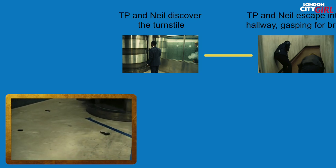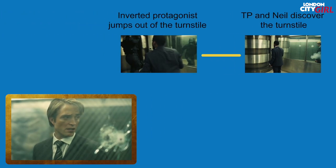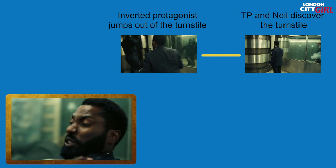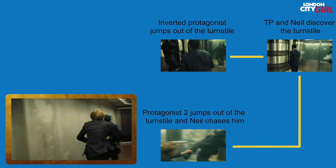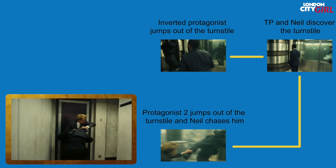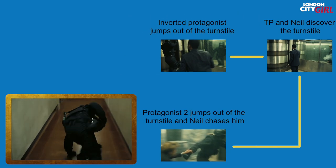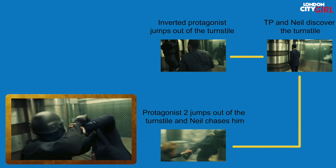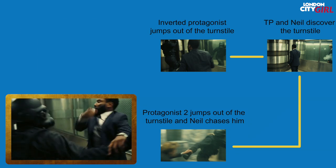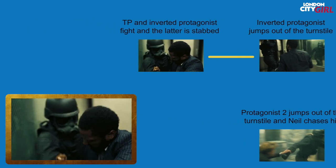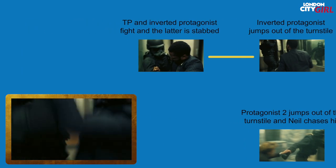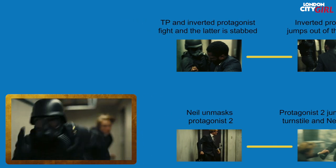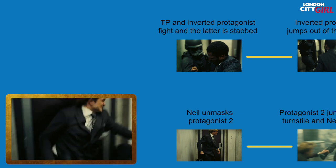The protagonist and Neil then discover a turnstile in the heart of the inner chamber of the Freeport. The protagonist is on the blue side and Neil is on the red side. Suddenly, two masked men exit the turnstile — the inverted protagonist on the blue side and a forward-moving protagonist on the red side, who we'll call Protagonist 2. The original protagonist and the inverted protagonist fight. The protagonist stabs the inverted protagonist as they continue to fight through the chambers and hallways. Meanwhile, Neil has chased after Protagonist 2 and unmasked him.